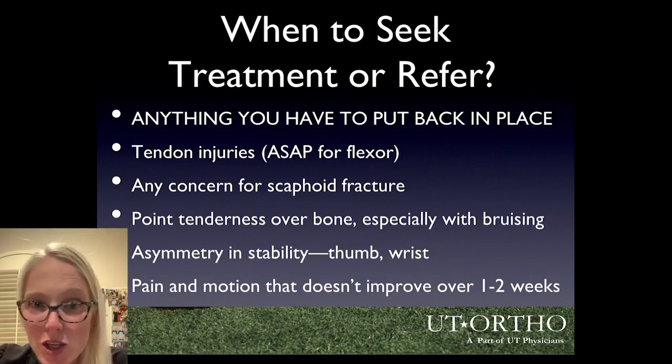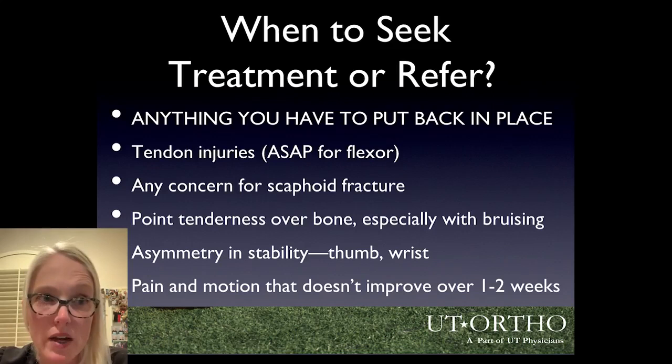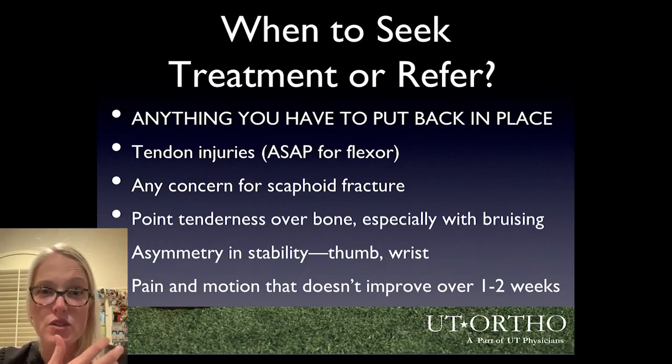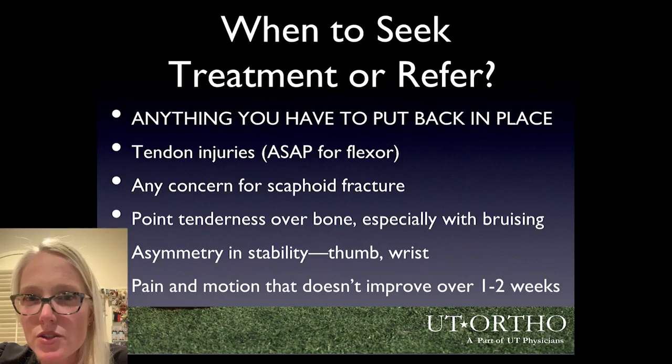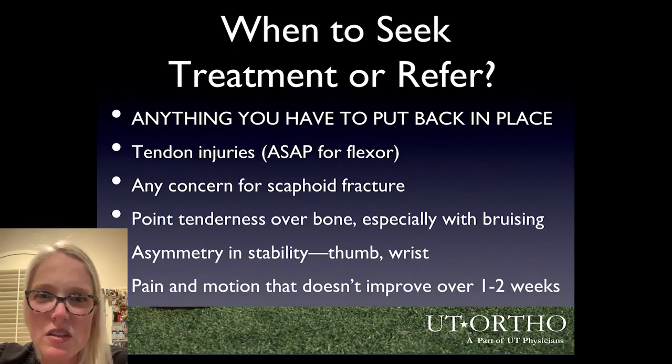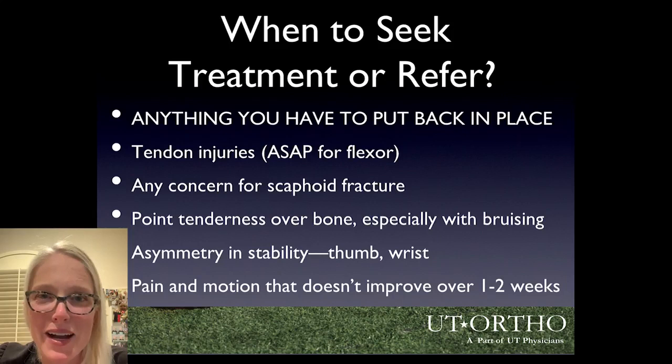To summarize, when is it a good idea to seek further evaluation or refer someone? Anything that was put back in place, any concern for a tendon injury — especially a flexor tendon injury, which needs evaluation as soon as possible — any concern for a scaphoid fracture with thumb-sided wrist pain after a fall, significant point tenderness over bone with bruising, differences in stability or deformity, or any pain and limited motion that isn't starting to improve over a week or two. All of those need to be looked at. Thanks so much for letting me chat with you tonight — I'm happy to answer any questions about athletic injuries of the hand.